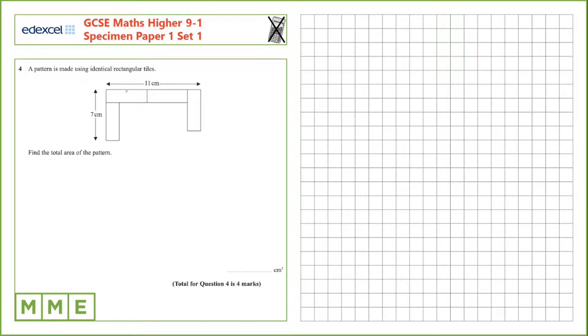Question 4. A pattern is made using identical rectangular tiles. Find the total area of the pattern. We don't actually have the dimensions of these tiles, so we're going to have to name them. We'll call this L and that W.